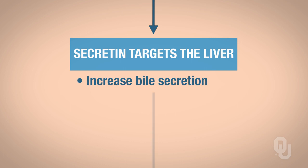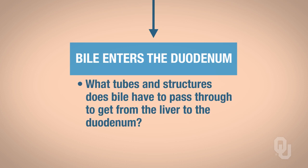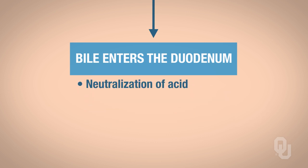Bile can then enter the duodenum. What tubes and structures does bile pass through to get from the liver to the duodenum? Ultimately we end up with a high amount of bile in the duodenum. That neutralizes the acids and helps emulsify fats—that's the function of your bile.